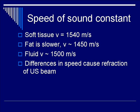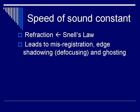Furthermore, with regards to the assumption of constant sound speed, refraction is described by Snell's Law, which was covered in earlier lectures. Specifically, refraction leads to three groups of errors or artifacts: the first is misregistration, the second is edge shadowing — otherwise known as defocusing of the ultrasound beam — and lastly, refraction can cause ghosting, which is the doubling of the image.